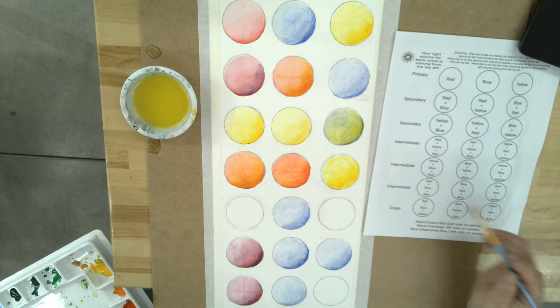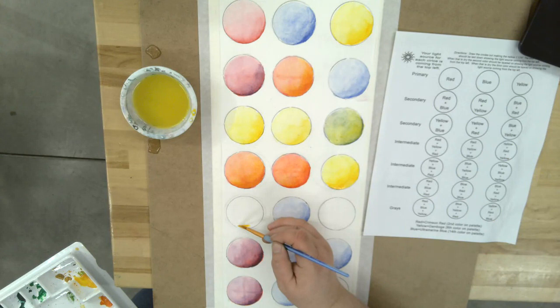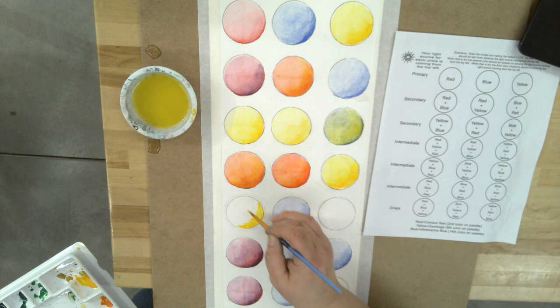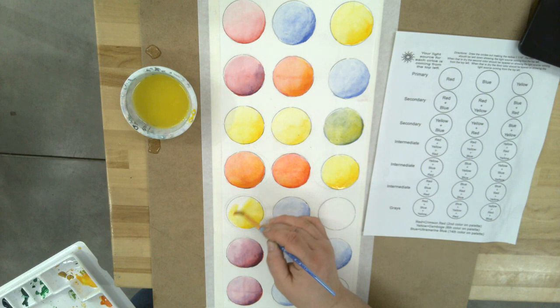Let's go down to row number five. Yellow is listed first, so we're gonna make it darker on that bottom right corner and dip it in the water and pull it up.